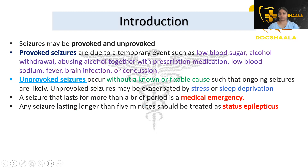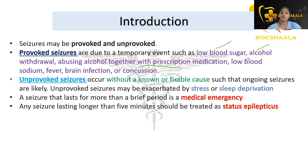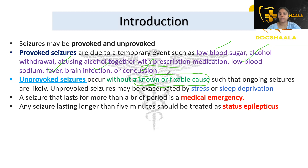Seizures may be provoked or unprovoked. Provoked seizures occur when there is a medical condition such as low blood sugar, alcohol withdrawal — which can lead to a delirium-like state — abusing alcohol together with prescription medication, low blood sodium, fever, or brain infection. Unprovoked seizures are those with no known or fixable cause; they may occur due to exaggerated stress or sleep deprivation.